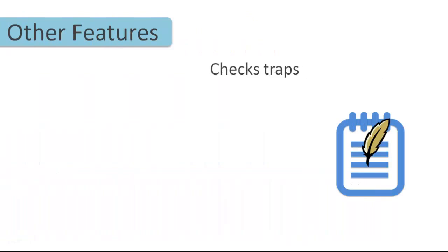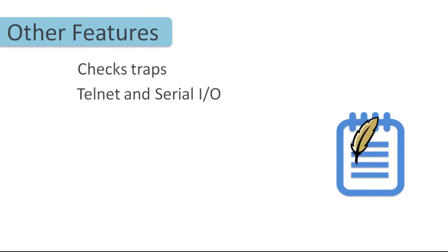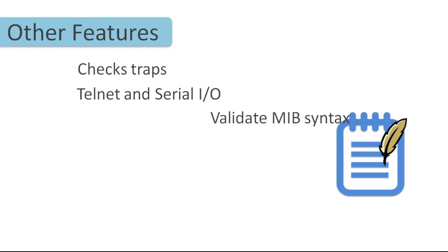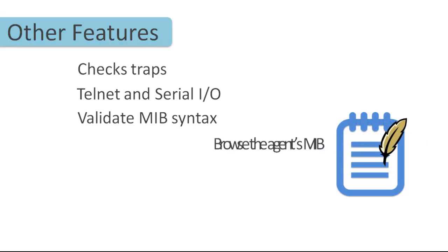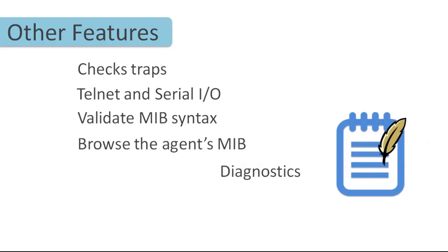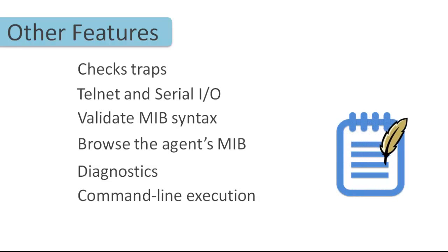Utilities like a MIB browser, trap checker, and script generator, along with scripting support for Telnet and Serial I/O, are also present. The included MIB compiler can be used to validate the syntax of your MIBs. You can browse the agent's MIBs and run general communication diagnostics, and all the tests can be run in an automated manner within a test harness.